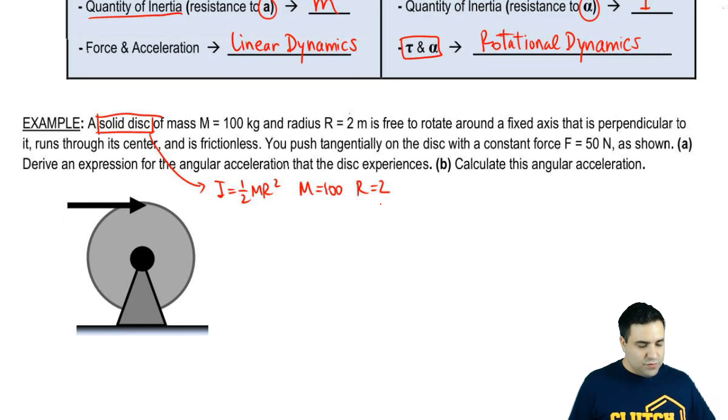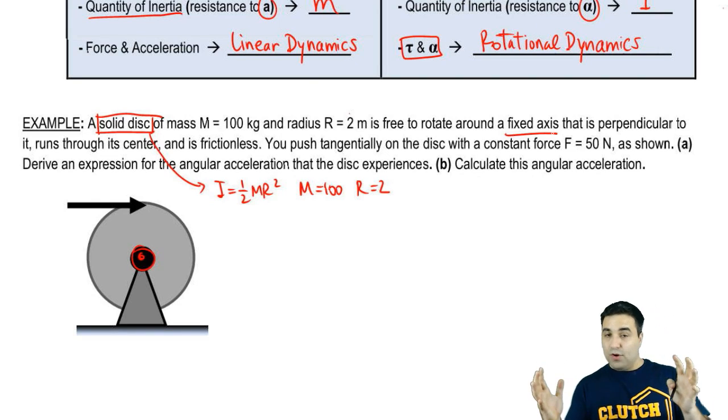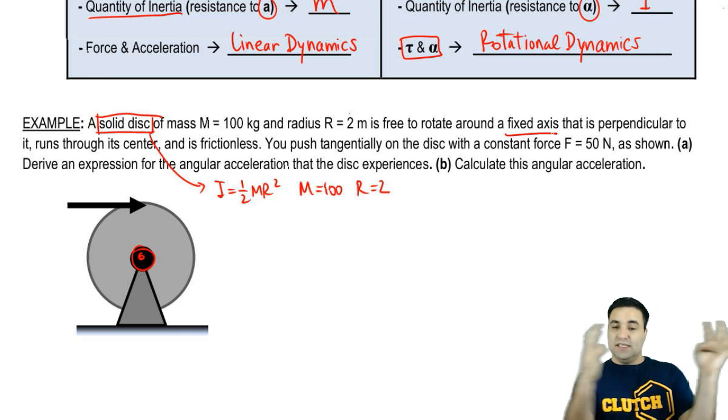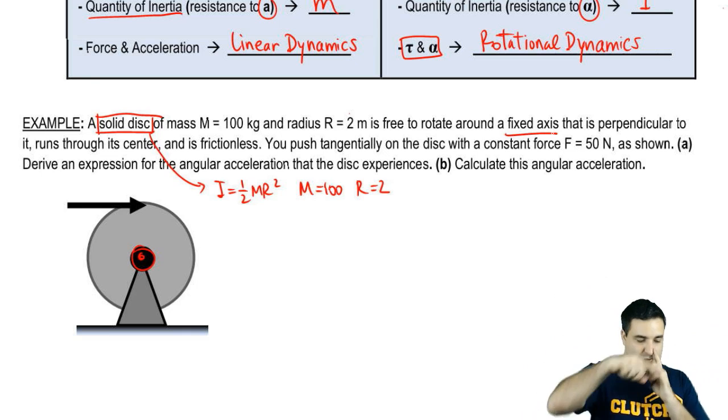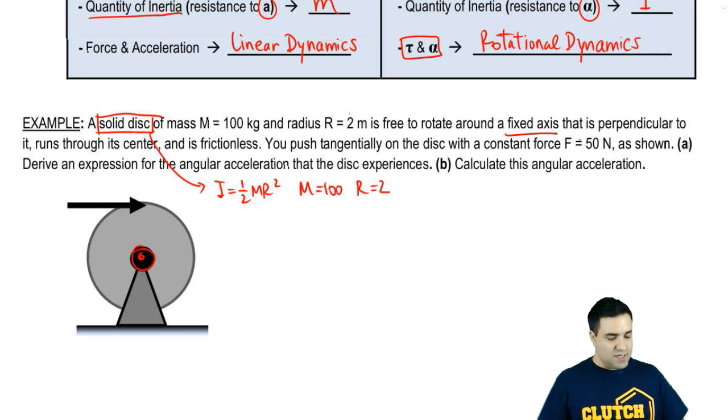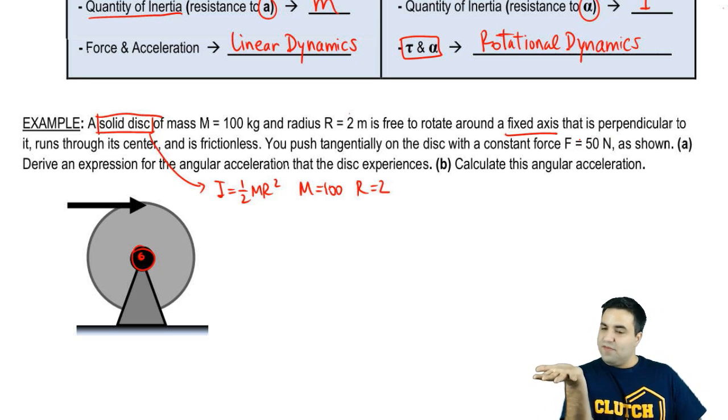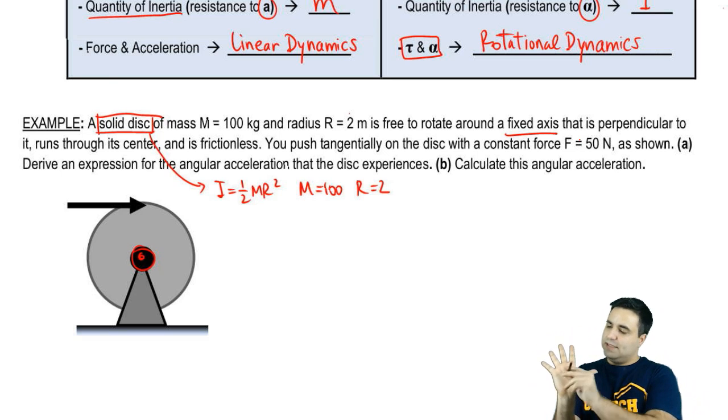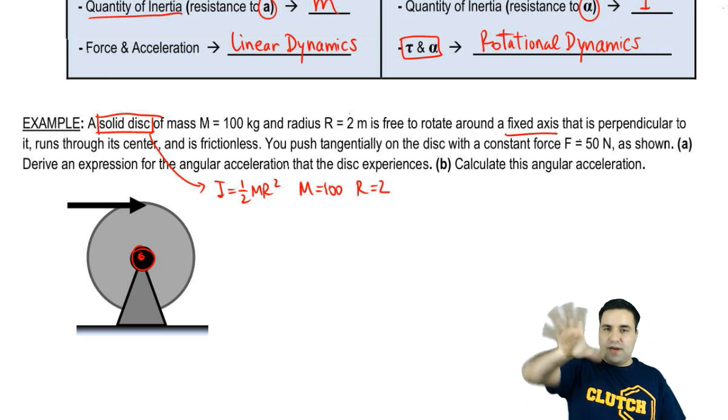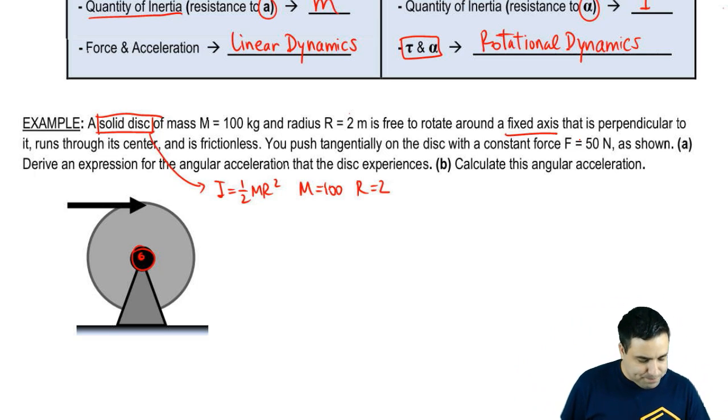It's free to rotate. So it can spin around a fixed axis. So it can rotate around the axis, but the axis doesn't move. The disk is fixed in place, and it can only spin in place. The axis is perpendicular to the disk. That means that if you have the face of the disk, the axis points this way, which just means the disk is going to spin around itself. And it's frictionless.